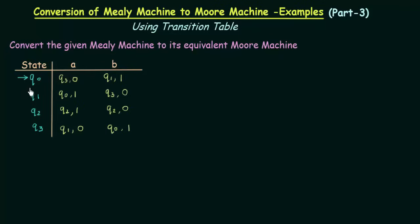As we start, let us check what states we have. We have states q0, q1, q2, q3, and we have inputs A and B and outputs 0s and 1s. Since this is a Mealy machine, it shows us where the states go on getting input A and B and the outputs associated to the transitions. The first step to convert it to a Moore machine is to check the states in the transitions and see if there are any states that give different outputs for different inputs.